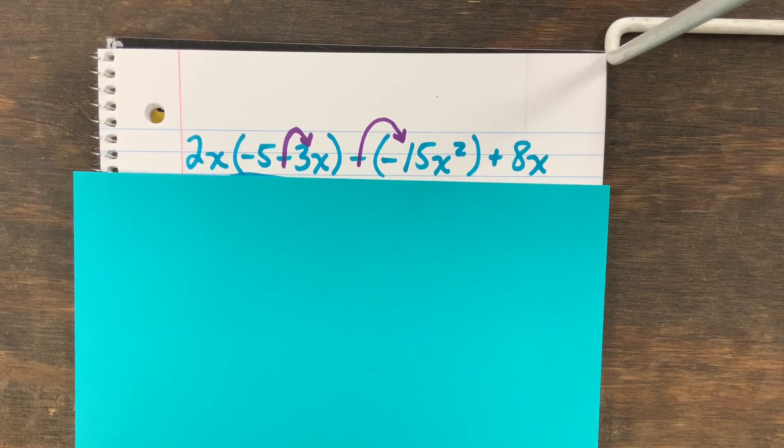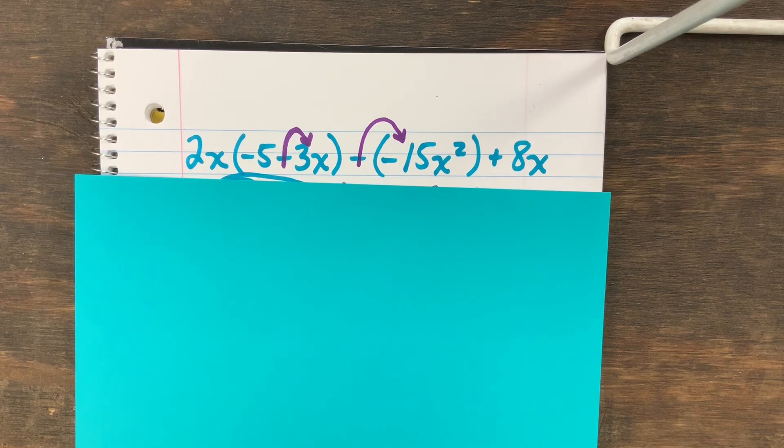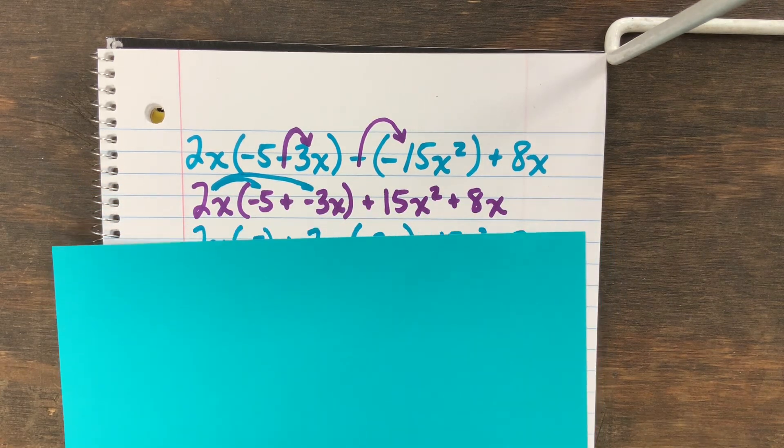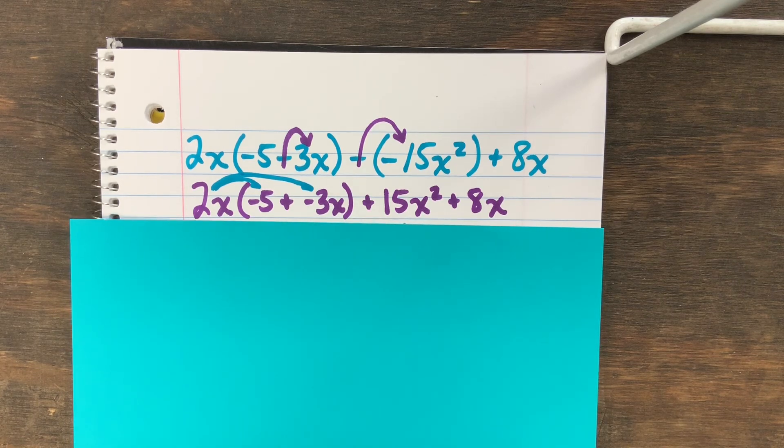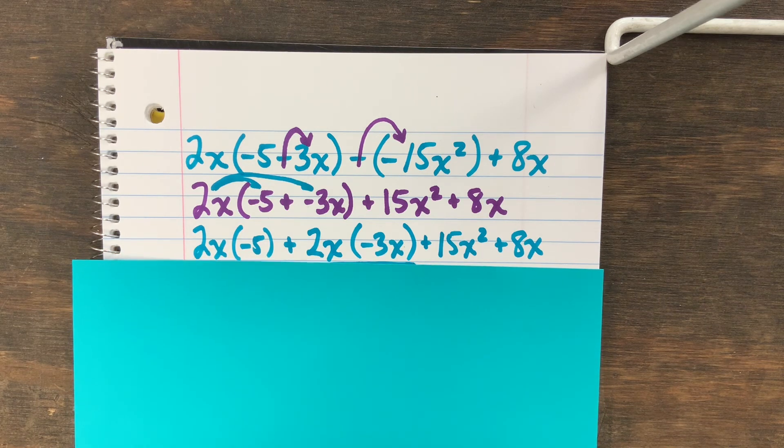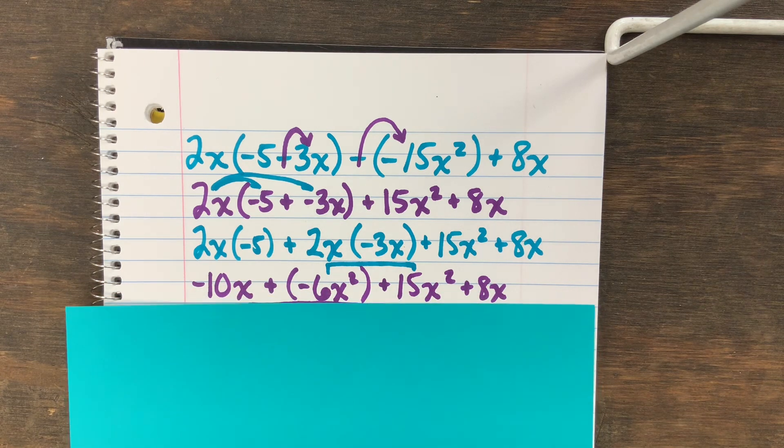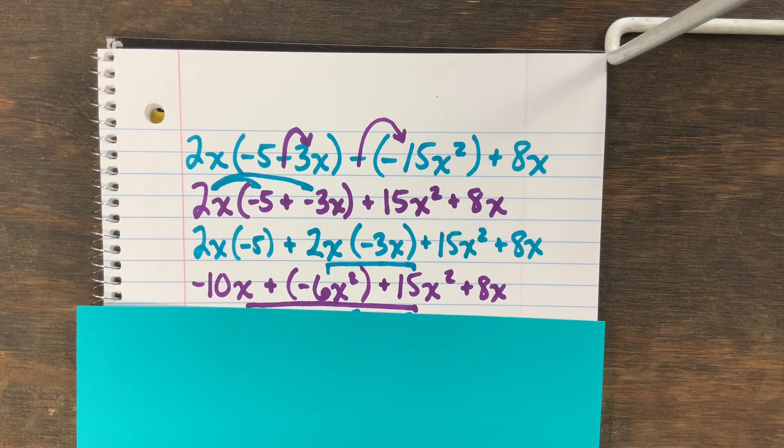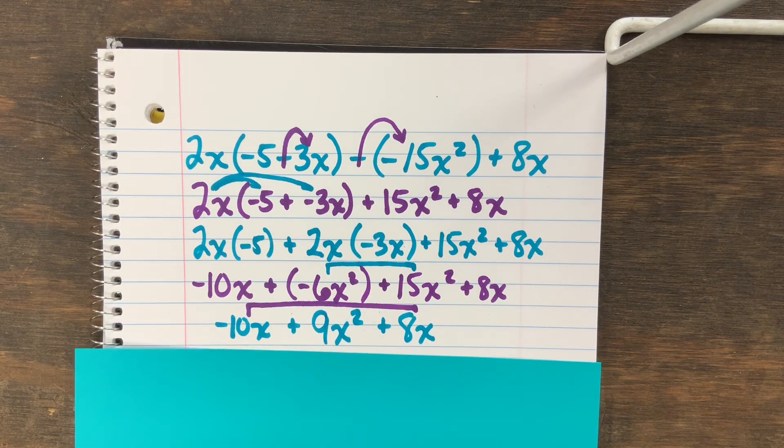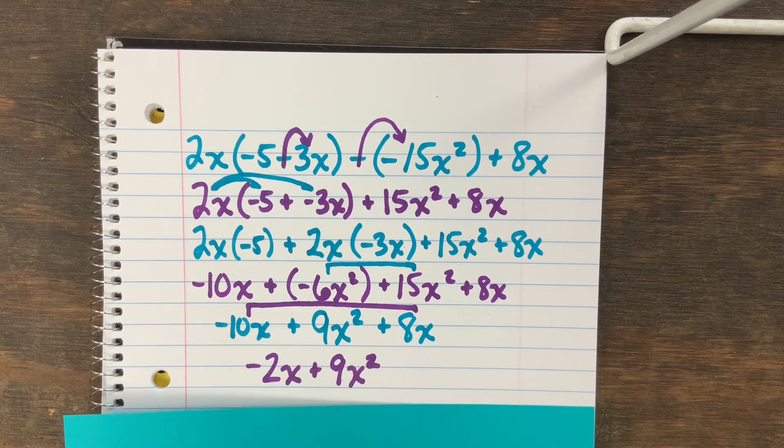So start off with adding the opposite with the negative 3x, or sorry, minus 3x and the minus negative 15x². And then you do distributive property and then put everything back down and the rest of the sentence thing. And then take the negative 6x² plus 15x² because they are like terms, and then add those 9x². Do the same thing but with the negative 10x and 8x: negative 2x plus 9x².